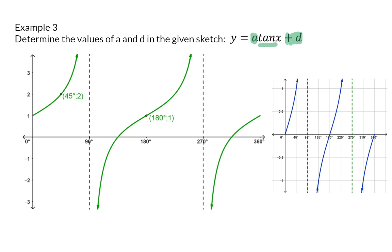This time, focusing on our mother graph, I'm going to start determining the d value. For this, I'm going to focus on that point exactly in the middle of our two asymptotes, which usually is at 180 degrees and 0. On our given graph, however, that point exactly in the middle is at 180 degrees and 1, which means the whole graph moved up 1. Therefore, our d value is 1.